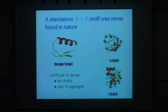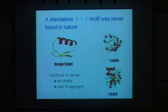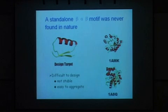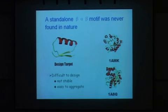This motif has never been found in nature as a standalone structure. We don't know the exact reason, but we guess it's probably because this small protein tends to aggregate — the hydrophobic core may not be easily stabilized. Another possible reason is that during early evolution we could observe these small protein structures, but because they tend to aggregate, through evolution they formed into various types of larger proteins. Anyway, we chose this small protein structure as our design target.